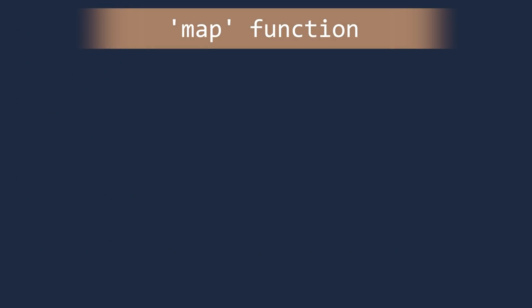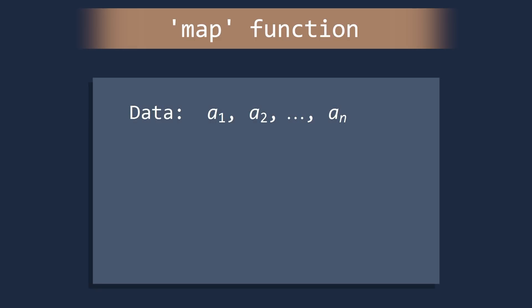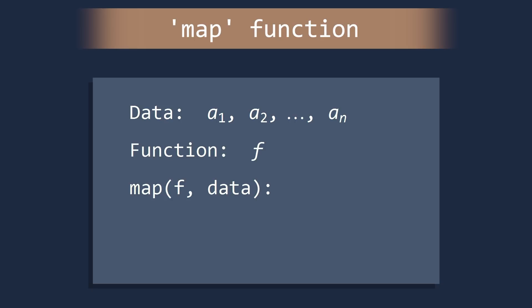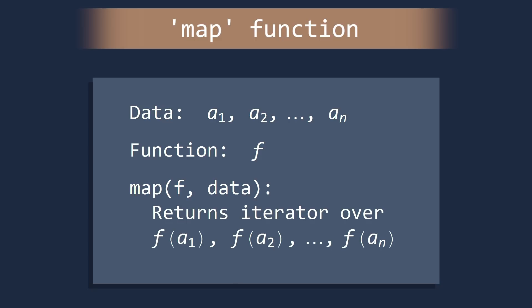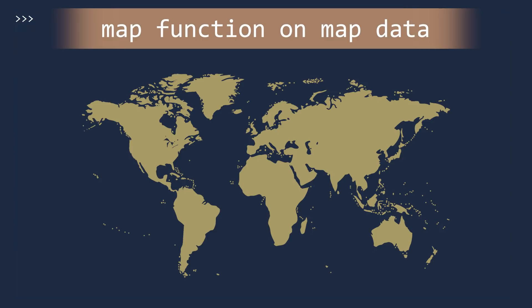Here is the general way the Map function works. Suppose you have a list, tuple, or other iterable collection of data, and you would like to apply the function f to each piece of data. With the Map function, you first specify the function, then you specify the data to iterate over. The Map function will return an iterator over the collection of f applied to each piece of data. For a second example, we will use the Map function when working with data for a map.